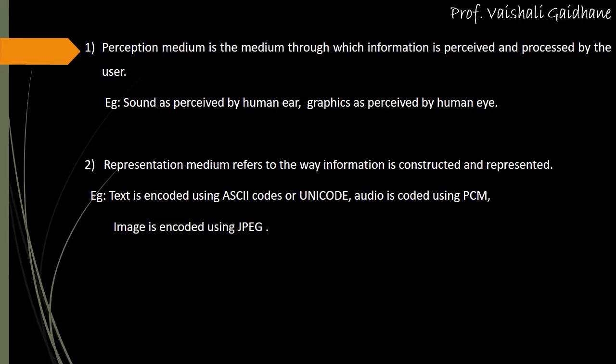Another type of medium is the representation medium. Representation medium refers to the way information is constructed and represented. If you have information and need to represent it to some other person or pass it to another medium, you need to process it so that a third person can understand. For example, text is encoded using ASCII codes or Unicode because the computer can understand that language.